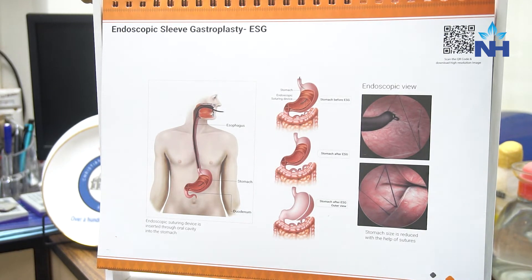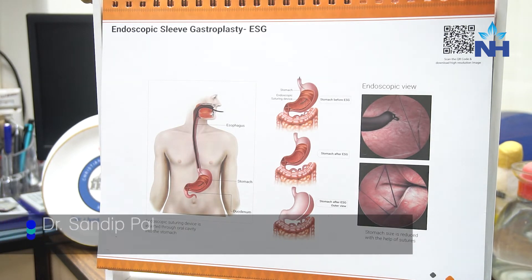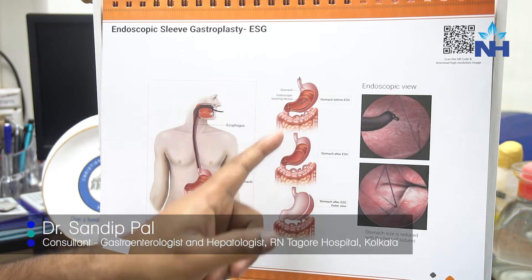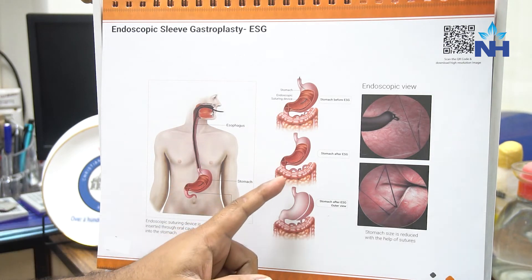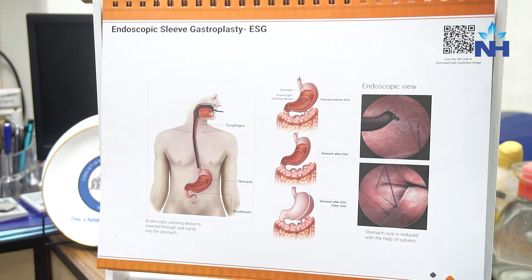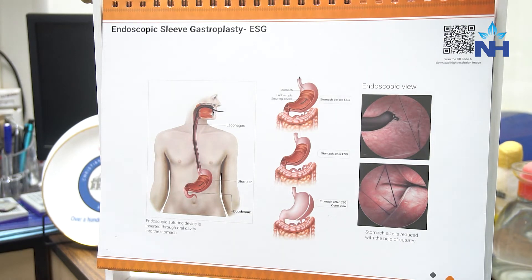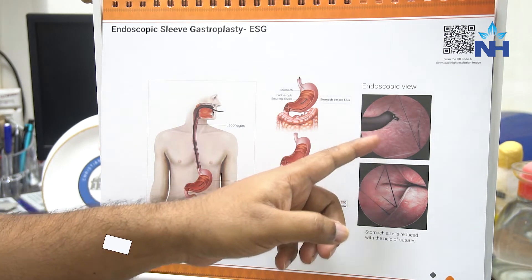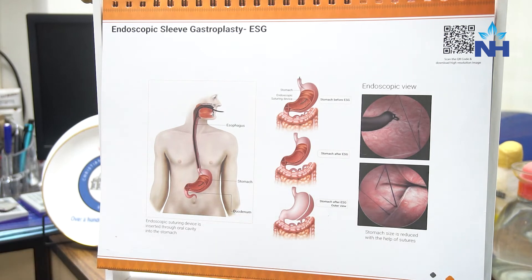As you can see in this pictorial diagram of the stomach and intestines, via endoscopy we reduce the stomach size. This is the normal picture of the stomach, and after ESG, this part of the stomach appears cut off — but we do not actually cut off or remove the stomach from the body. In bariatric surgeries, they do cut the stomach — that is called endoscopic sleeve gastrectomy. Here, we reduce the size of the stomach differently.